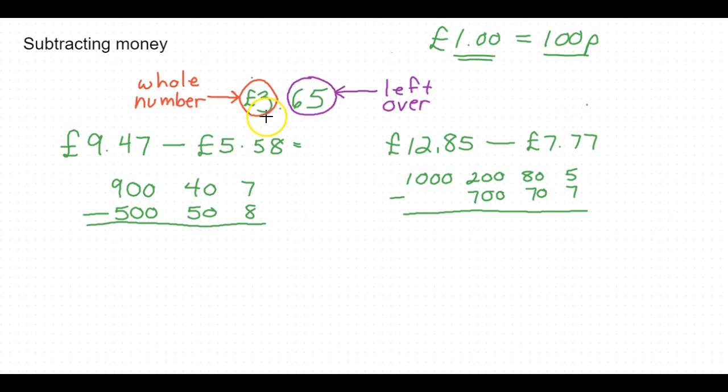Remember that the digits on the left of the decimal point are whole numbers. That means they are whole sets of 100 pence. So in this case, this is three pounds, so we've got 300 pence plus 65 pence left over. These are the whole numbers and this is what's left over.